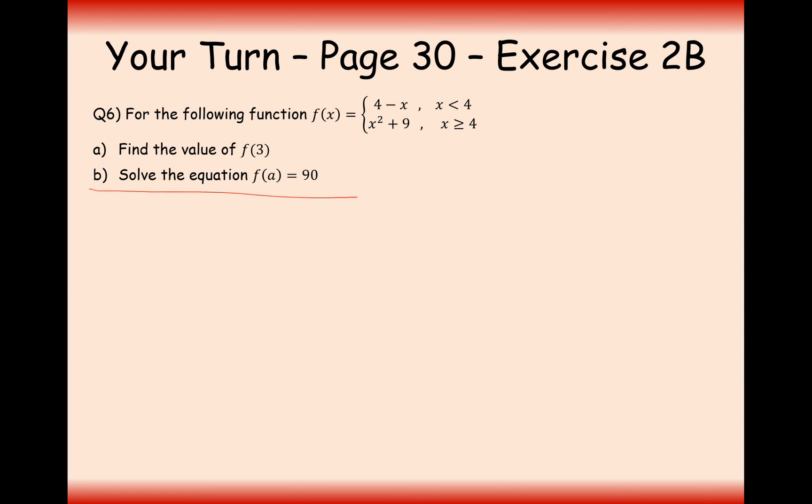Well done for having a go at this question here then. So for part a we're substituting in 3. But which equation do we substitute it into? Well we substitute it into the top one, because 3 is a number less than 4. So for all the numbers less than 4 we substitute it into the 4 minus x equation. So f(3) equals 4 minus 3 equals 1. So your answer is 1. You don't substitute it into both, you only substitute it into the top one because it's a 3 which is less than 4. Or if we were finding f(5), then we would only substitute it into the bottom one because 5 is a number bigger than 4.